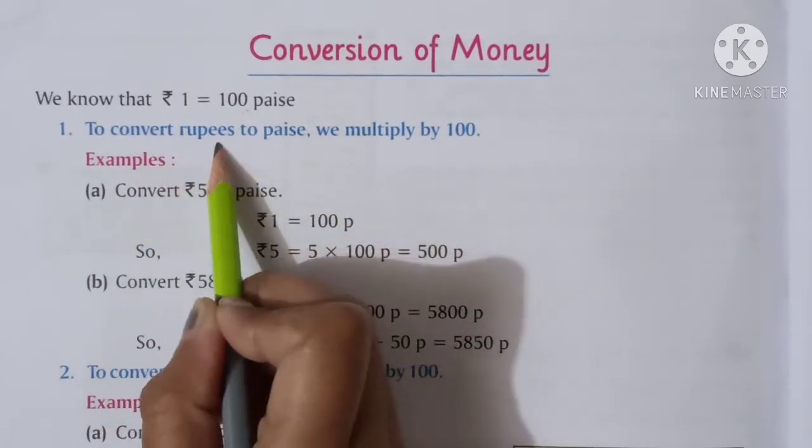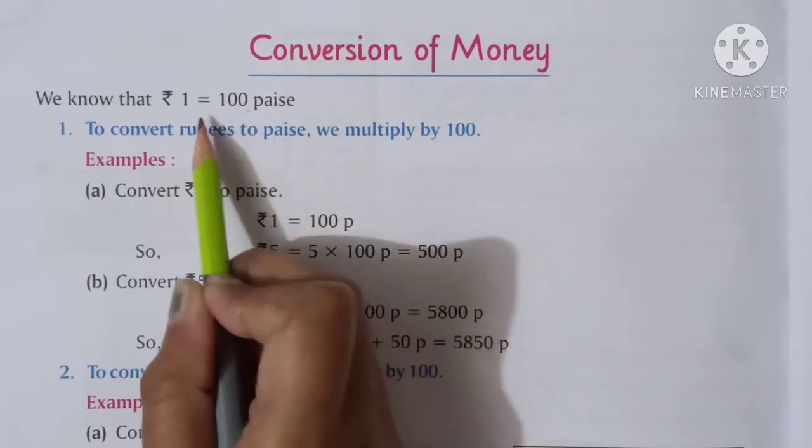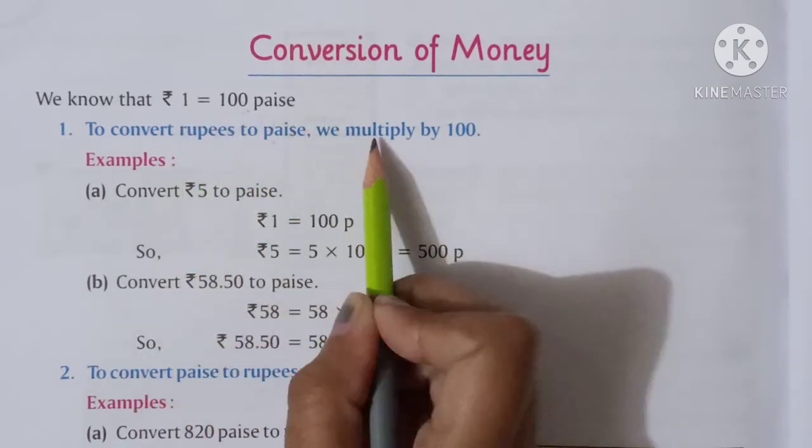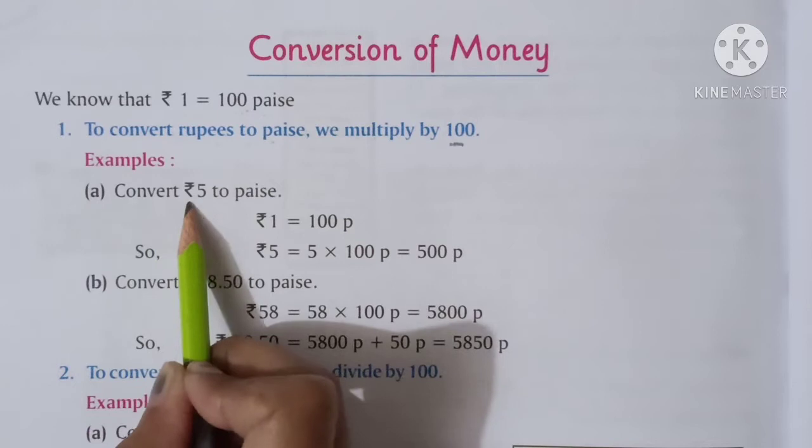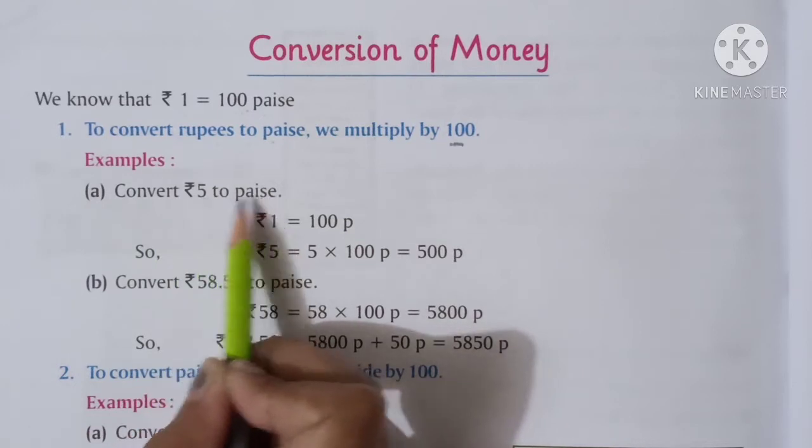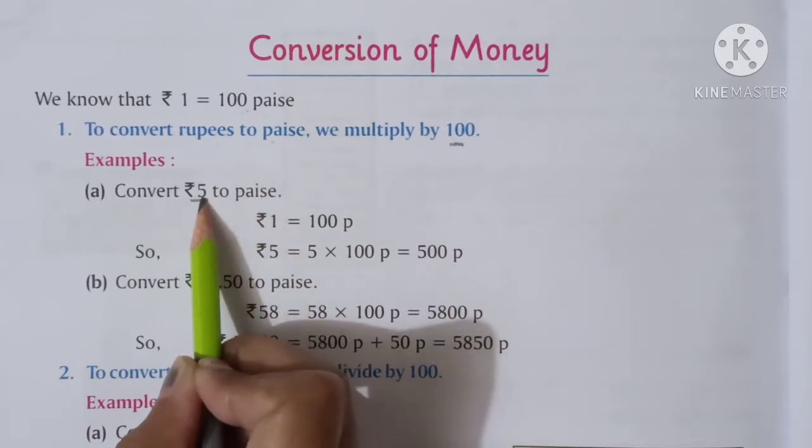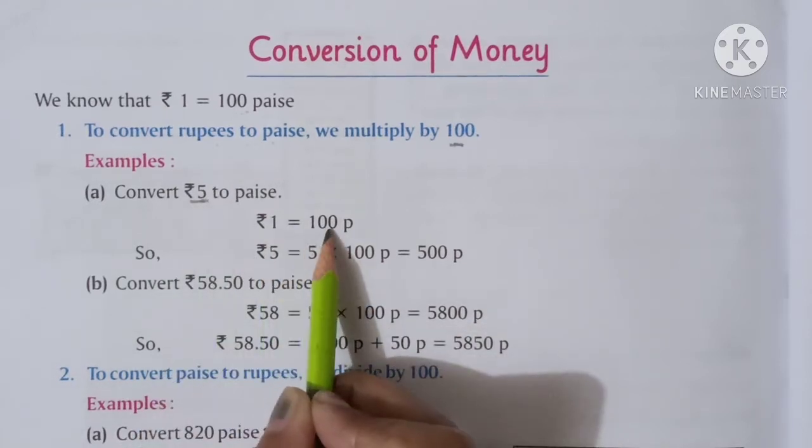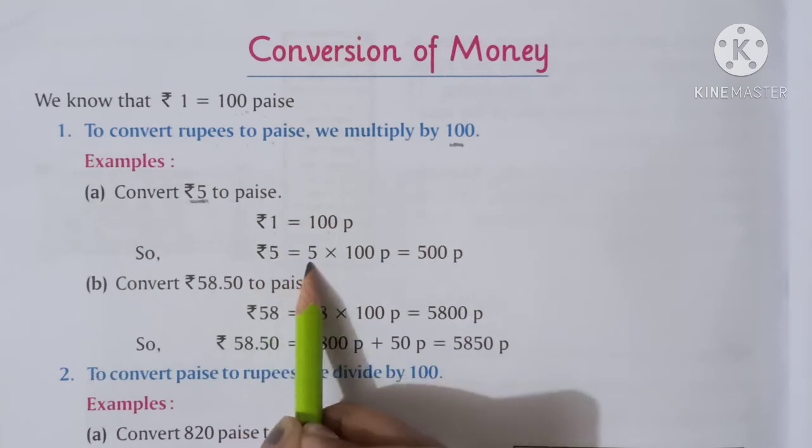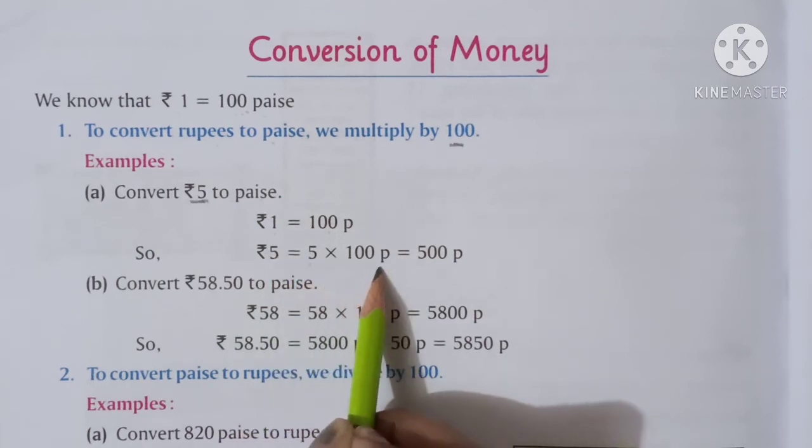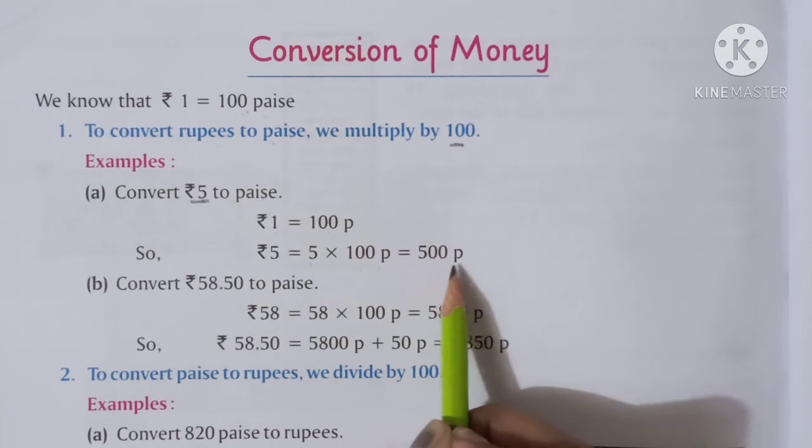So to convert rupees to paise, rupees se paise pe jane ke liya, we multiply by 100. For example, convert rupees 5 to paise. Rupees 5 hai, aapko paise mein convert karna hai. So hum jante hain ki 1 rupee is equal to 100 paise. So rupees 5 is equal to 5 multiply 100 paise, that is 500 paise.